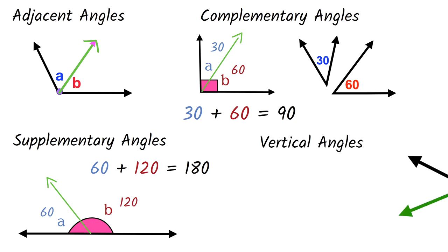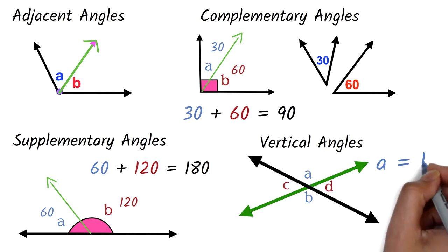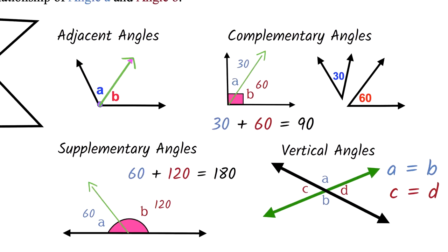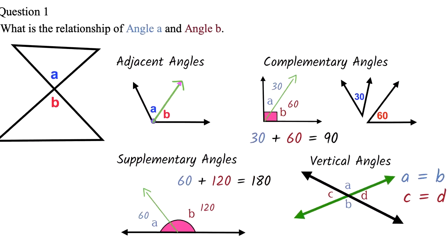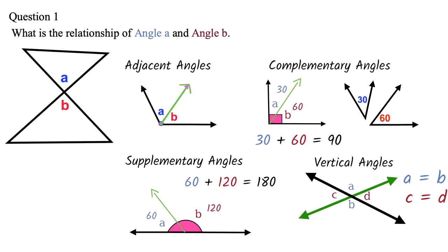Vertical angles are angles opposite each other when two lines cross each other. Vertical angles are equal. This is also a very important statement. So here, angle A and angle B are equal. Angle C and angle D are also equal. So back to our question. This should be easy now. We can see that angle A and angle B are vertical angles.